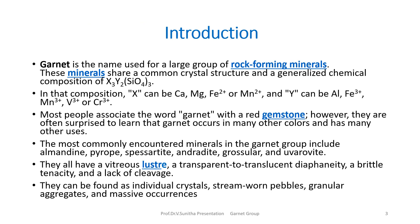Coming to the introduction or background, garnet is generally the name used for a large group of rock-forming minerals. These minerals have a common crystal structure and a generalized formula that can be written as X3Y2(SiO4)3. Here X represents calcium, magnesium, iron, or manganese, and Y can be aluminum, iron, manganese, vanadium, or chromium. These are nesosilicates with SiO4 tetrahedra.